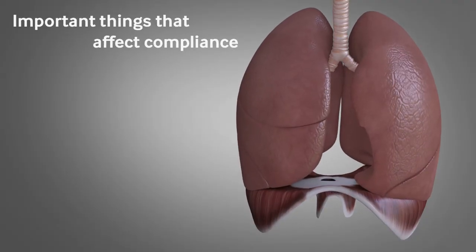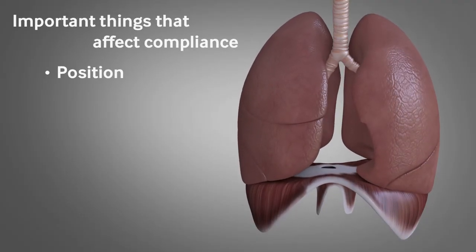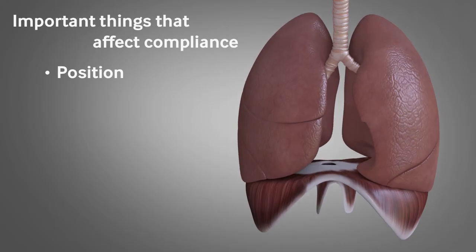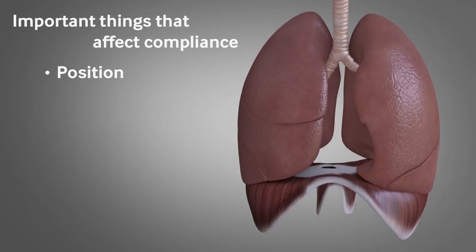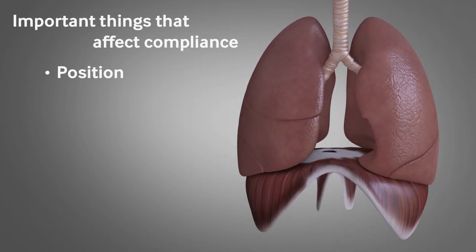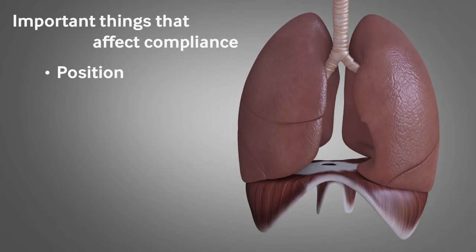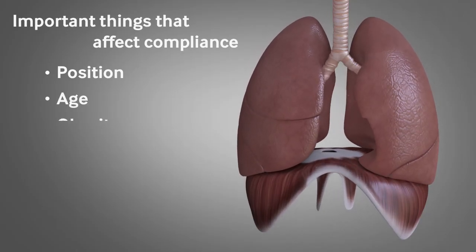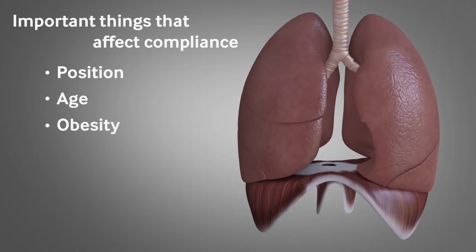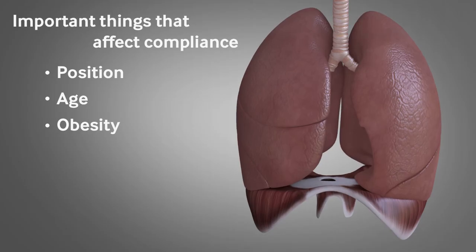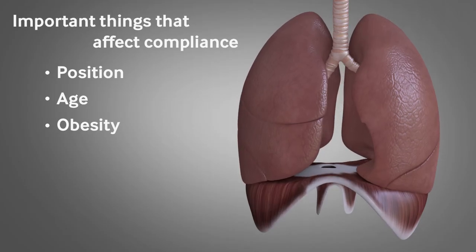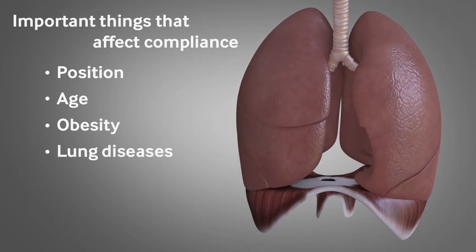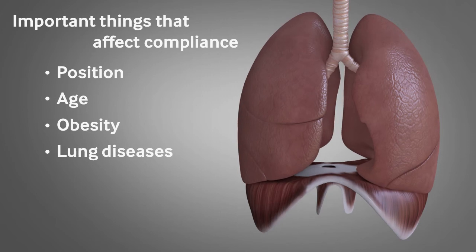Important things that affect compliance are position — compliance is lower when lying flat, as the diaphragm shifts up and is pushed into the chest by the abdominal organs — age, as the lungs get stiffer as we get older, and obesity, where a heavier, thicker chest wall makes it stiffer and more difficult to expand. Lung diseases can also affect compliance.